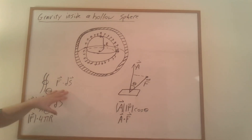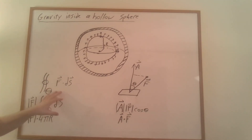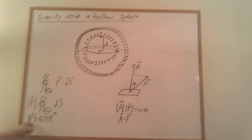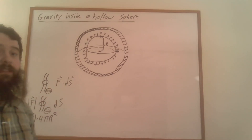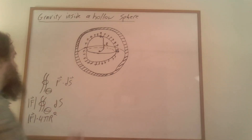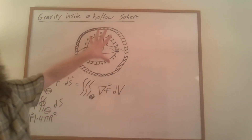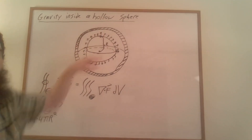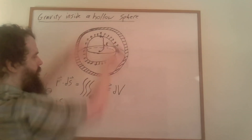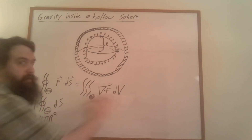We know what the area of the surface of the sphere is - it's just 4πr². So this is one way of calculating this integral. And there's another way of calculating this integral, which will allow us to work out what the magnitude of F is. Specifically, we're going to calculate this integral using the divergence theorem. We can calculate the flux flowing out of the region by adding up over the interior of the region how much the field is spreading out - the divergence of the field - and integrating that over the entire volume.